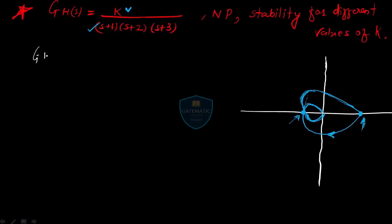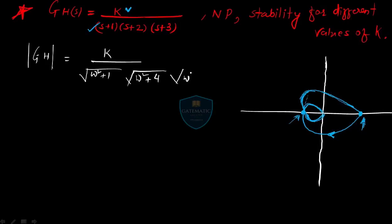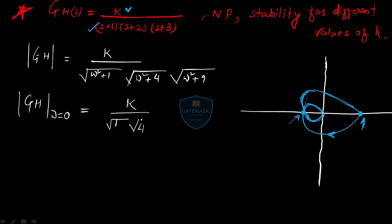The magnitude of G(s)H(s) is k divided by √(ω²+1) · √(ω²+4) · √(ω²+9). At ω = 0, you can put in and find the value. When ω = 0, the magnitude is k / (1 · 2 · 3) = k/6. So at ω = 0, the magnitude is k/6.